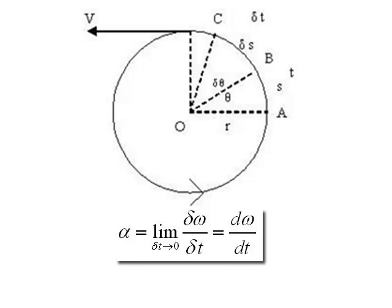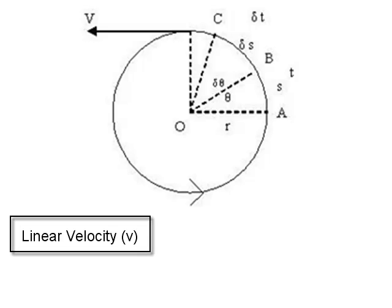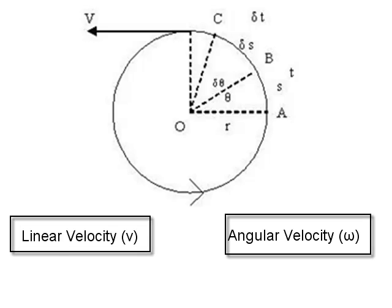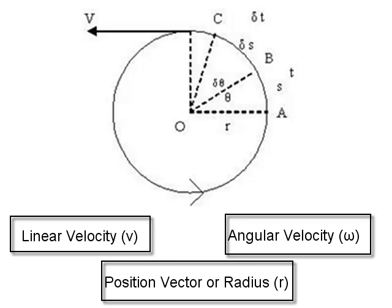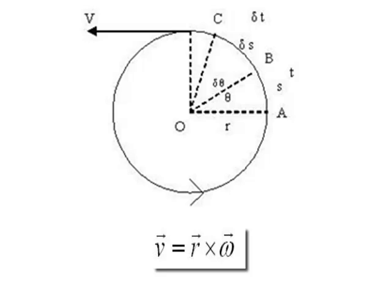Different linear quantities are related to the quantities in circular motion as follows. There is a relation between linear velocity v, angular velocity omega, and position vector r or radius r. It is given as v equals r omega. Vectorally, it is the cross product of omega and r.